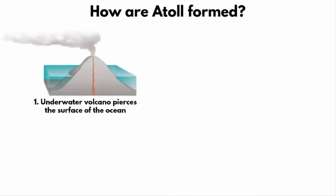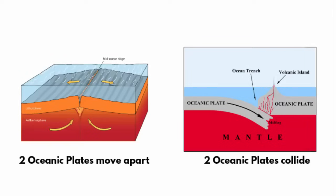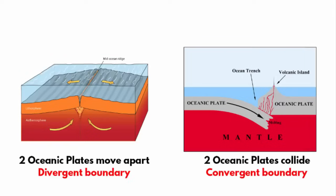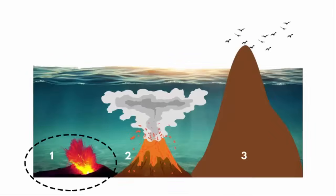At first, there is an underwater volcano that creates a sea mountain. Let me also tell you how a sea mount is formed. We know that volcanoes erupt underwater and pile up the sea floor with lava. As the volcano continues to erupt,